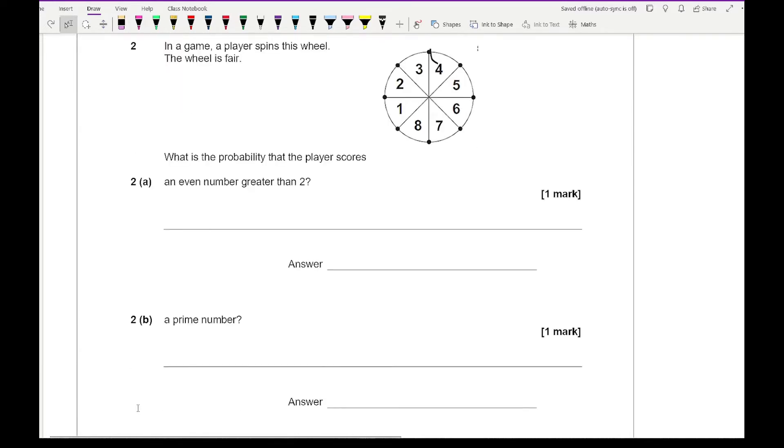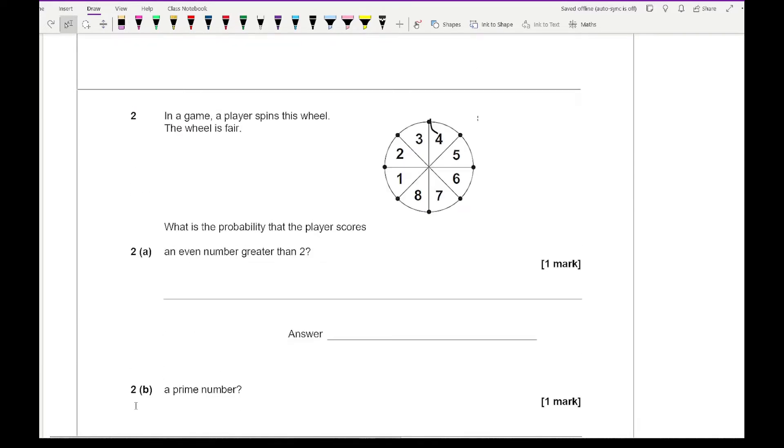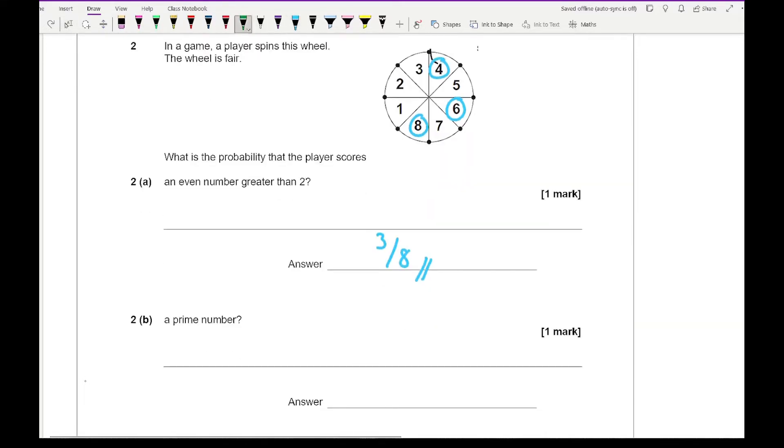Moving on to question 2. It says in a game a player spins the wheel. The wheel is fair. What is the probability that the player scores an even number greater than 2? Looking at this, the numbers greater than 2 are 4, 6, and 8. So there are 3 numbers out of a possible 8. Then it says what's the probability of a prime number? The prime numbers are 2, 3, 5, and 7. So that becomes 4 over 8 which is a half.